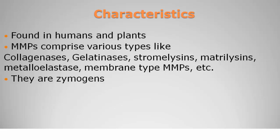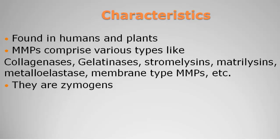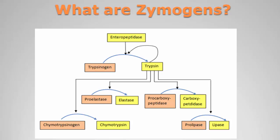The characteristics of MMPs: these are found in humans and plants. They comprise various types like collagenases, gelatinases, stromelysins, metalloelastases, membrane-type MMPs, etc. They are zymogens — meaning they are inactive peptides that only become active when another enzyme cleaves the inactive peptide to make an active one.